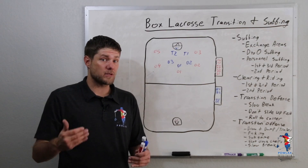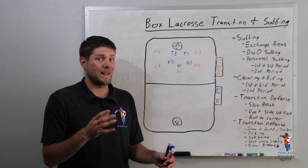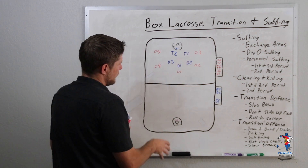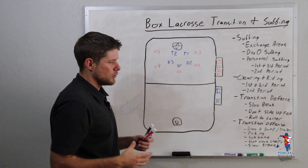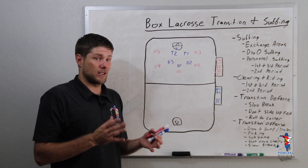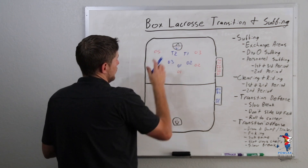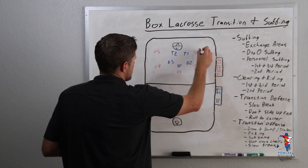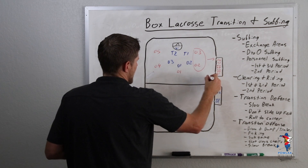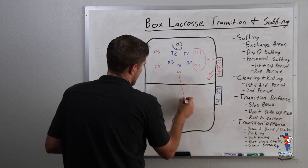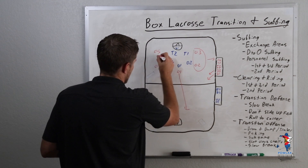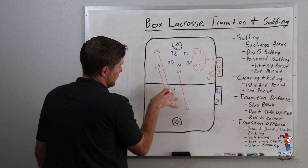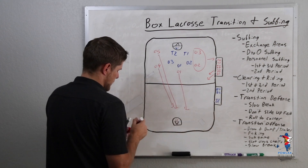Now once we get to the second period, we're most likely going to be doing defense-to-offense subbing and not personnel subbing, but we're going to show you exactly how it works. So in this example, the blue team is going to be clearing, the red team is going to be riding, and we're going to show you how some of our offensive personnel are definitely going to be playing defense. They get a shot on cage and the goalie catches it. These two players are the only players who are going to be able to get off the floor in time to get D1 and D2 onto the floor. O1, O5, and O4 have to get in to play defense and get deep into the zone.